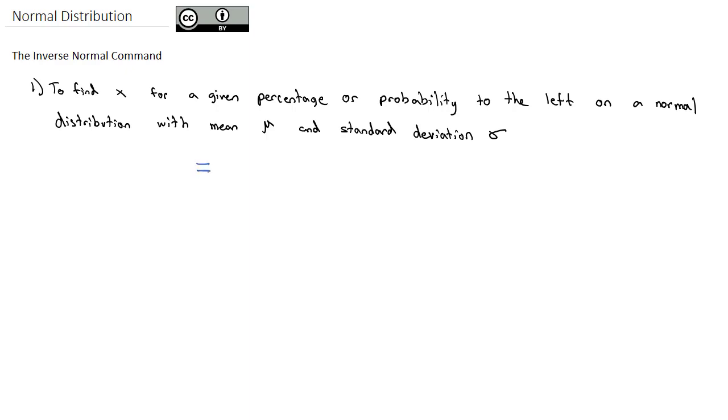we can use the inverse normal command on Excel, which is norm.inv for inverse. The syntax is p, which is the proportion or probability to the left, comma mu, comma sigma, where p is the probability to the left.